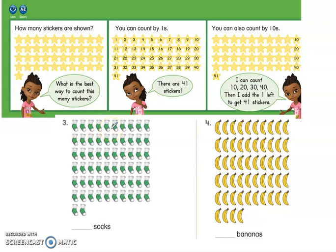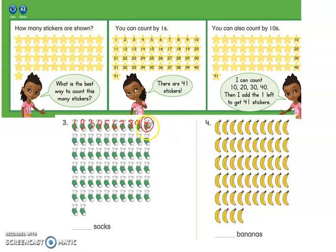So I'm going to check if I can do the same with the socks. The first thing I need to do is to make sure that I have ten in one row. Let's see if that's true: one, two, three, four, five, six, seven, eight, nine, ten. Yes, there are ten in this row.